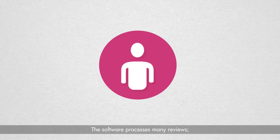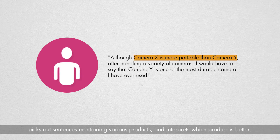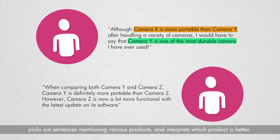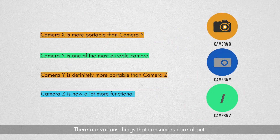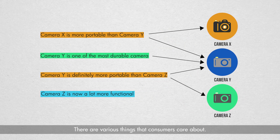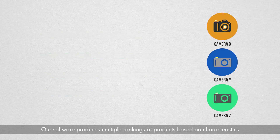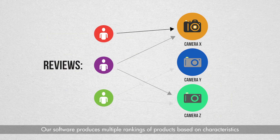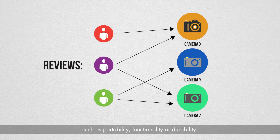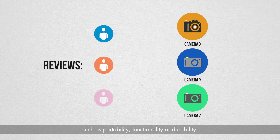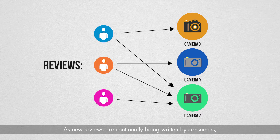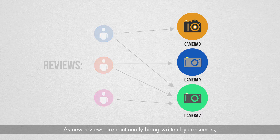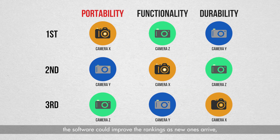The software processes many reviews, picks out sentences mentioning various products, and interprets which product is better. There are various things that consumers care about. Our software produces multiple rankings of products based on characteristics such as portability, functionality, or durability. As new reviews are continually being written by consumers, the software can improve the rankings as new ones arrive, reflecting the most updated view of product comparisons.